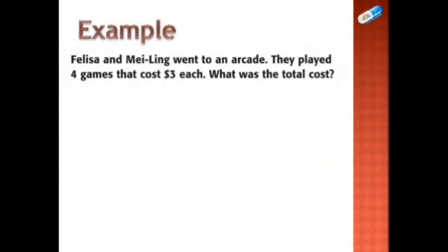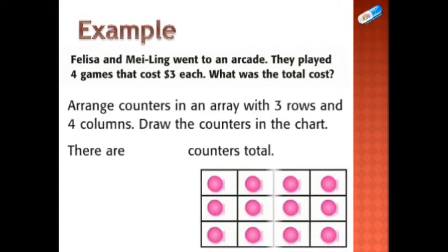An example: Felisa and Mei Ling went to an arcade. They played four games that cost three dollars each. What was the total cost? To do this, you're going to arrange counters in an array with three rows and four columns, because there are four games and each game costs three dollars. So we're going to make a table like this with four columns. These are the four games and three rows like this.